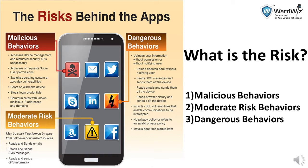The next category is moderate risk behavior. A risk may be performed by an application from an unknown or untrusted source. It tries to read and send email from your device, and also tries to send and read SMS messages to unknown intruders. It also reads and sends GPS information. If this information is shared and sent to an intruder, it can be dangerous for your banking and can cause financial loss.